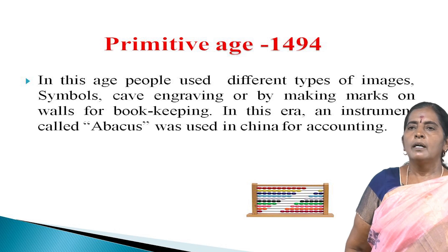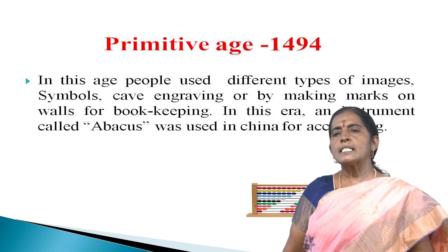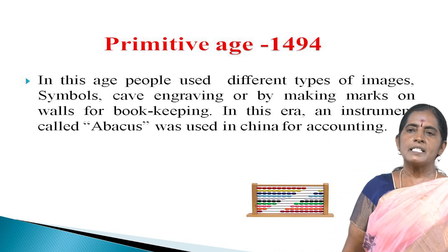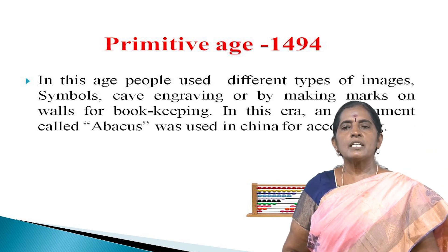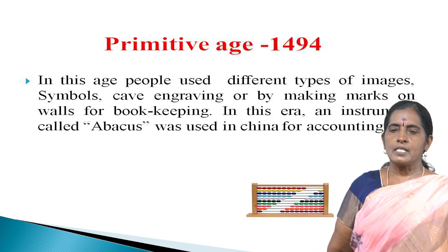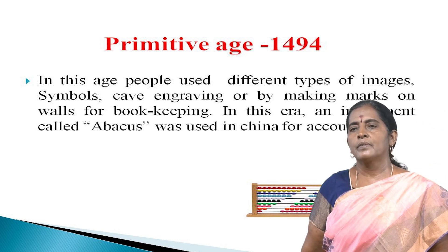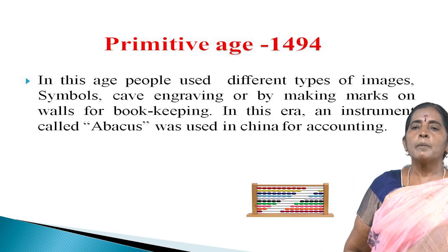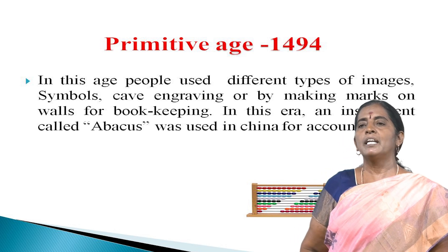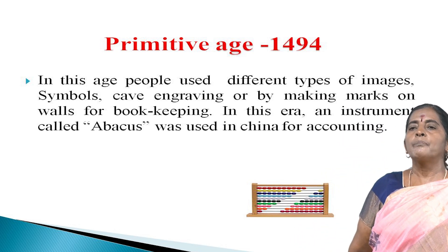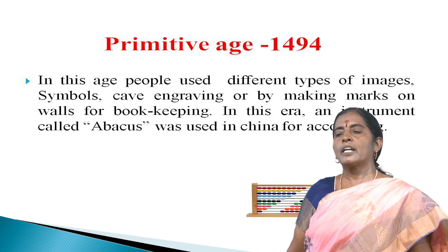In the primitive age, up to 1494, people used different types of images, symbols, and cave engravings. This stage is called the stone age. People made marks on the wall for bookkeeping — even in villages, tally marks were used for tracking purchases like milk. In this era, an instrument called the abacus was used in China for accounting.